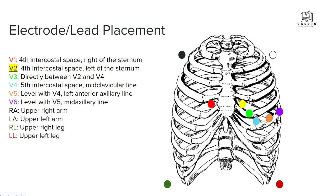We're going to go through some electrode and lead placement. V1 and V2 are both on the fourth intercostal space. V1 is to the right of the sternum and V2 is to the left of the sternum. So counting down — one, two, three, four — that's where V1 goes, and just across on the other side is V2. V3 just needs to be in between V2 and V4. V4 needs to be in the fifth intercostal space at the midclavicular line — in the middle of the clavicle, down to the fifth intercostal space.